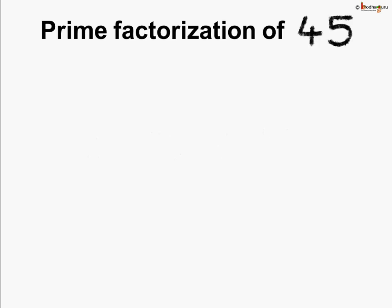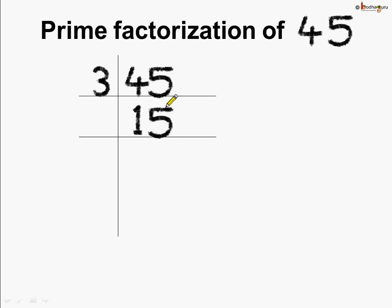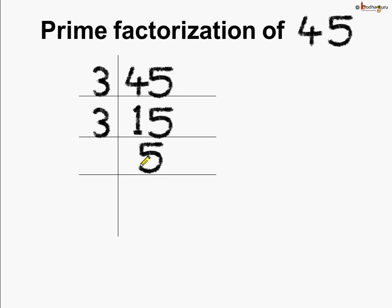Now what is the prime factorization of 45? Let us do it. We write down 45 here. Since 45 is an odd number, we will try to divide it by 3. Yes, it does divide. So 3 times 15 are 45. Again it is divisible by 3, so 3 fives are 15. Now 5 is here and 5 is a prime number, so it is divisible by itself and 1. So 5 ones are 5. Here we did the prime factorization of 45, meaning all these divisors are prime numbers.